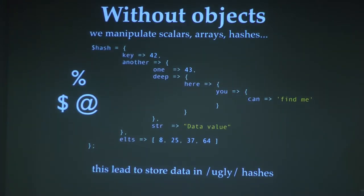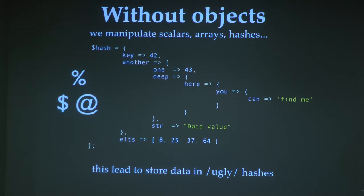Perl is mainly about three things: hashes, arrays, and scalars — HV, AV, and SV internally. Your data are mainly stored in hashes. Using these structures can be very difficult to investigate — to know exactly where your data is. You'll need dumper tools or deep code investigation. It's a nightmare and prone to many errors.